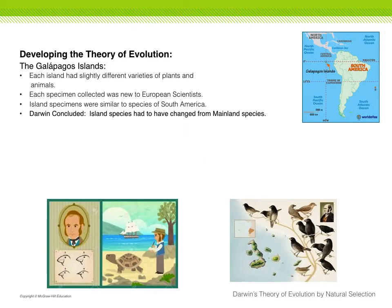One of the places that Darwin visited was the Galapagos Islands. Darwin noticed when he traveled from island to island that there were slightly different varieties of plants and animals on each island. He also noticed that each specimen he collected was something that wouldn't be recognized by a scientist back in Europe at his time. He also noticed that a lot of the specimens on the islands were very similar to specimens he'd seen in South America earlier in his voyage. So Darwin concluded that the island species had to have changed from mainland species — that they would have had to have come from the mainland of South America.